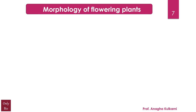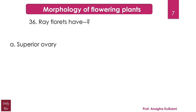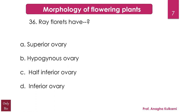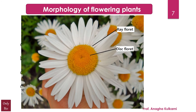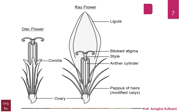The next question relates to the chapter Morphology of Flowering Plants. Ray florets have — A) superior ovary, B) hypogynous ovary, C) half inferior ovary, D) inferior ovary. The correct answer is D — inferior ovary. In sunflower, the outer peripheral zygomorphic flowers are the ray florets, while the inner central actinomorphic flowers are disc florets. Ray florets possess extra appendages called ligules, making them ligulate and zygomorphic. The gynoecium is bicarpellary, syncarpous, unilocular, inferior, with basal placentation and branched stigma.